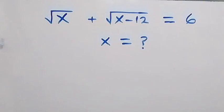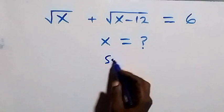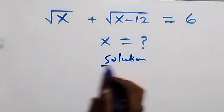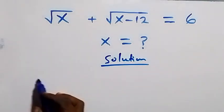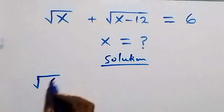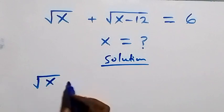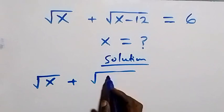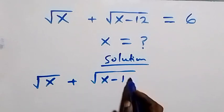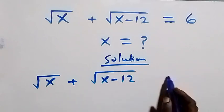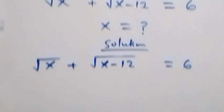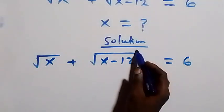Hello, you are welcome. I have to solve this nice problem. What is given is: root x plus root of x minus 12, equals 6. Here we can square both sides directly.